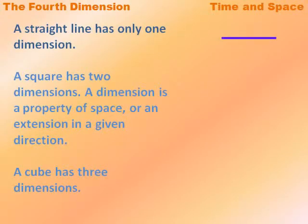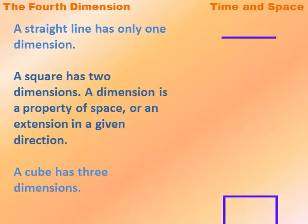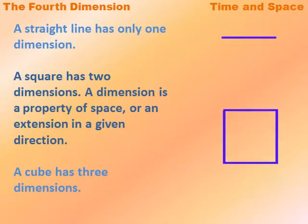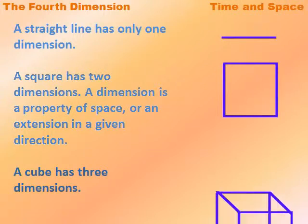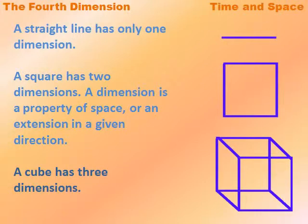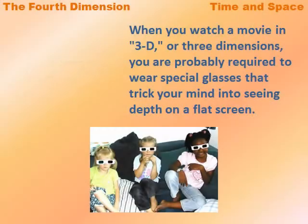A straight line has only one dimension. A square has two dimensions. A dimension is a property of space or an extension in a given direction. A cube has three dimensions.